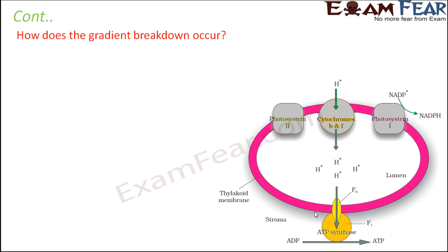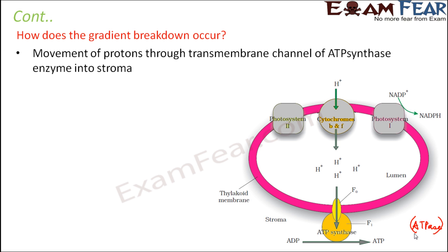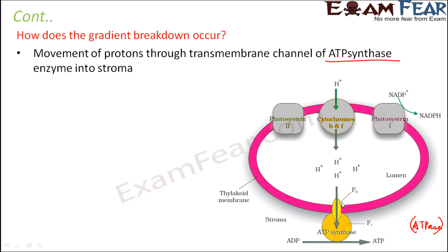The facilitator is an enzyme called ATP synthase, also known as ATPase. The movement of protons through the transmembrane channel of the ATP synthase enzyme into the stroma accomplishes this facilitated diffusion. ATP synthase is a protein embedded in the thylakoid membrane that acts as a channel, allowing protons to move through it from the lumen to the stroma — similar to a tunnel through a hill that provides a path for vehicles.